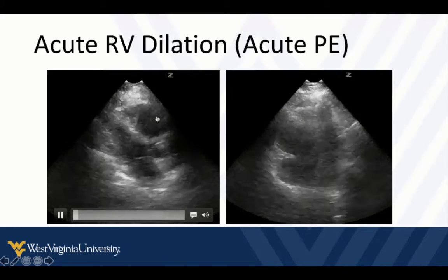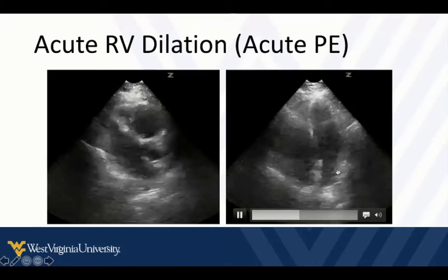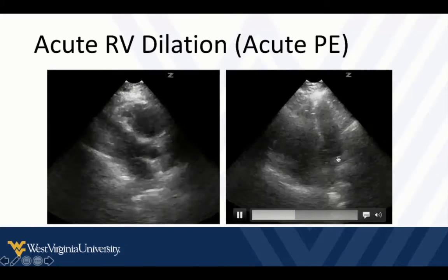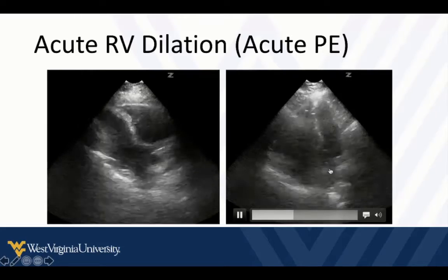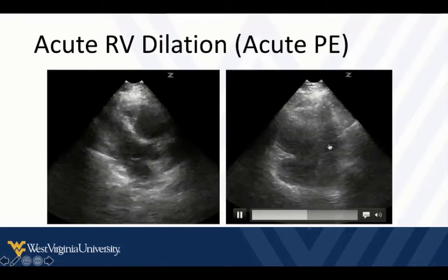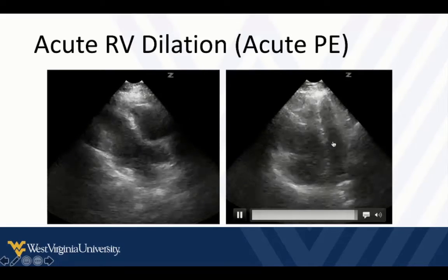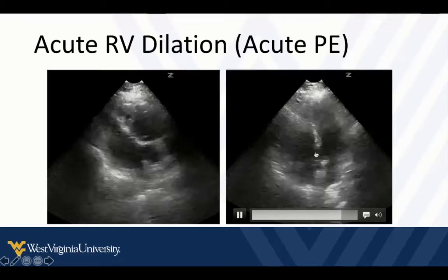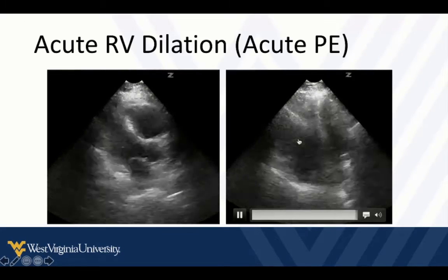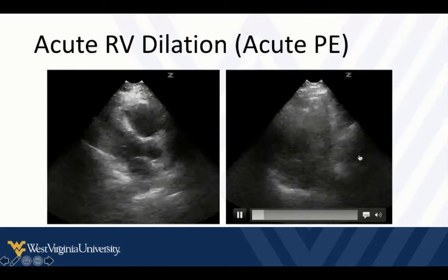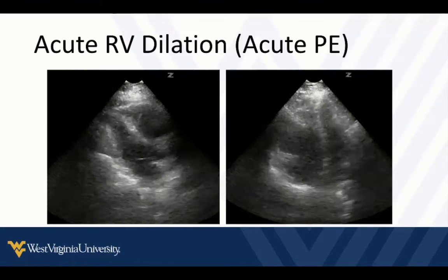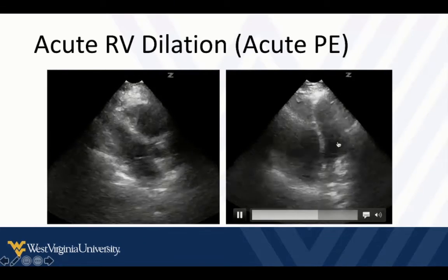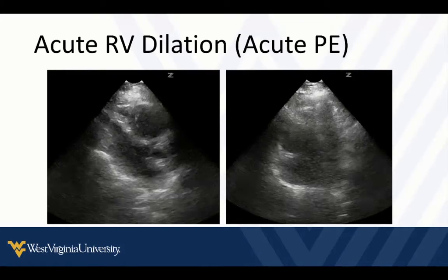In the apical four chamber view, to confirm it's an appropriate view, we can see pretty much the full length of the left ventricle, the full length of the left atrium, and the mitral valve. In this correct plane, the right ventricle is massively dilated. Knowing we're in the right plane gives us the clue that this is a true finding and not just an aberration of the probe's tilt or position. Sometimes I'll do a little rotation to make sure I'm seeing the left ventricle at its widest point.